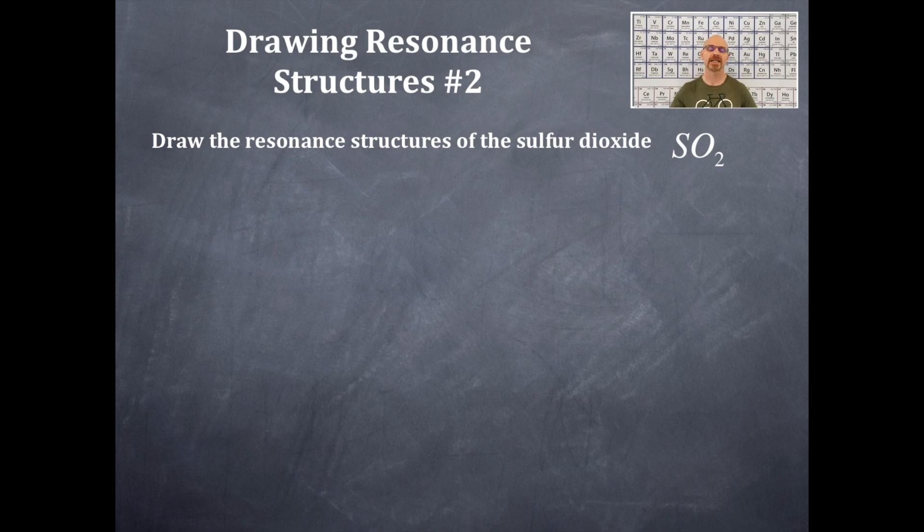From that formula SO2, we need to draw the Lewis dot structure. And from that, we're going to use the periodic table. How many valence electrons in sulfur? Six. How many valence electrons in oxygen? Six. But there are two oxygens. So six, twelve, eighteen. So we have eighteen total electrons. Then we're going to divide that by two to get the total number of electron pairs, which is nine pairs of electrons.